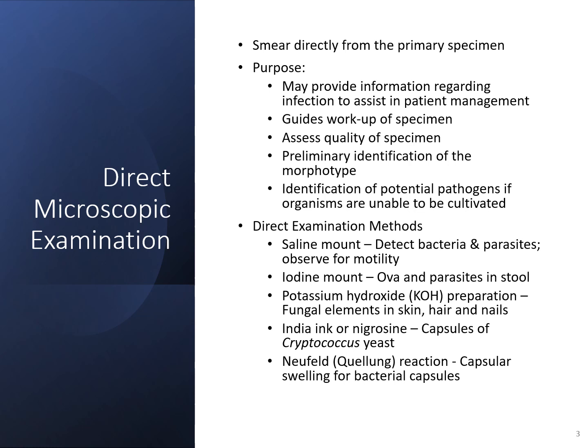Your direct examination methods include a saline mount, which detects bacteria and parasites in the specimen. An example is a vaginal wet mount done on a female patient, looking for bacterial vaginosis, trichomonas, yeast, or bacteria — or even looking at urine for bacteria. An iodine wet mount is used to look for ova and parasites in stool specimens; those eggs or organisms will stain an orange-brownish color, helping them stand out.